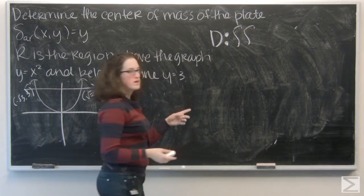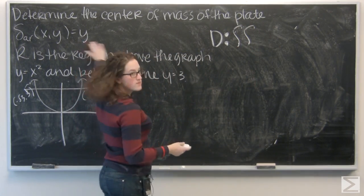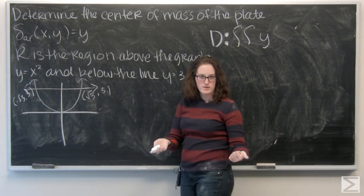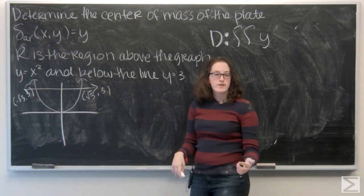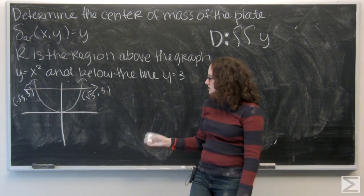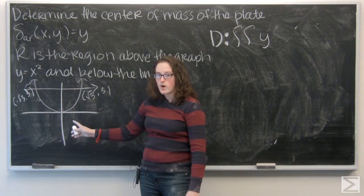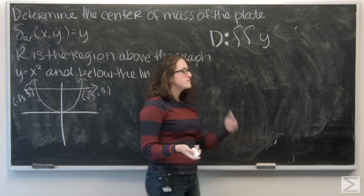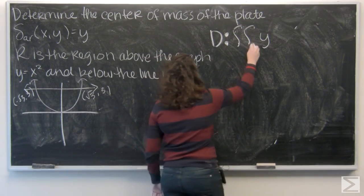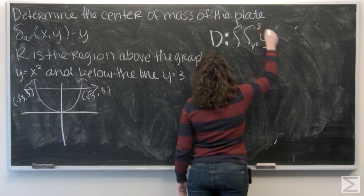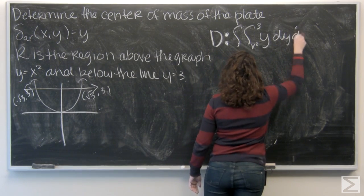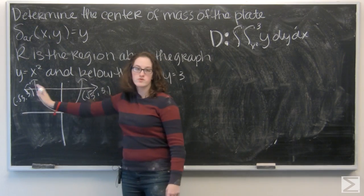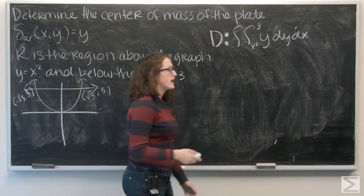I'll fittingly label it D. I'm looking at a double integral of y — that's my area density. Now let's figure out my bounds of integration. I want to integrate with respect to y first because, looking at my picture, my bounds on y are x squared to 3, so the function of x has to go first. Then x goes from negative root 3 to root 3.